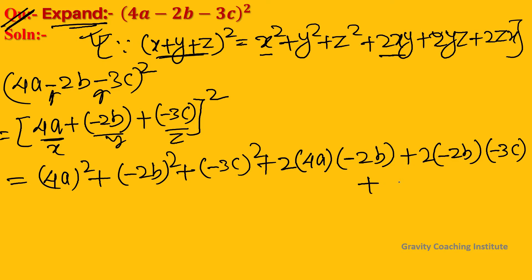For 2zx, we have 2 times -3c times 4a. Now calculating: (4a)² gives 16a², (-2b)² gives 4b², (-3c)² gives 9c². For the cross terms, first multiply the signs: plus times minus gives minus, then multiply the numbers to get -16ab. Minus times minus gives plus.